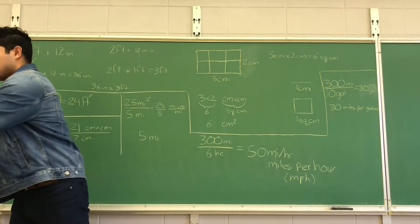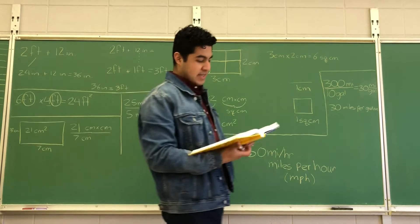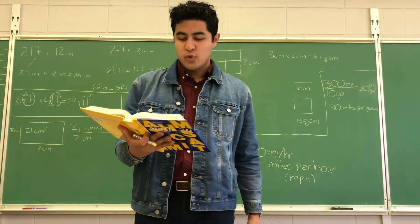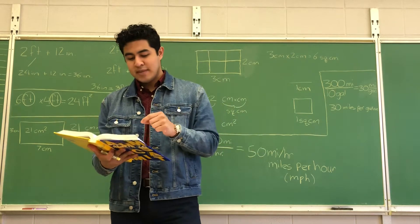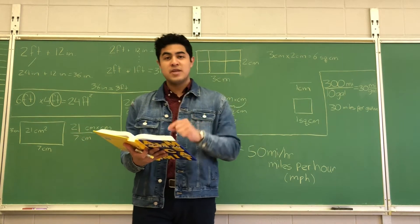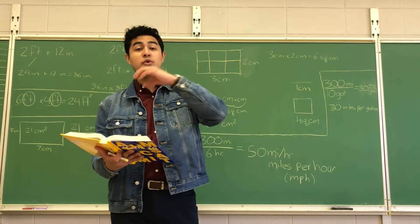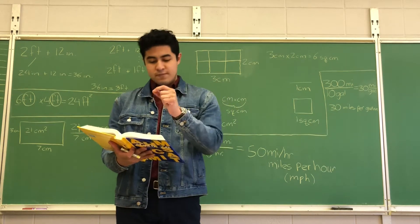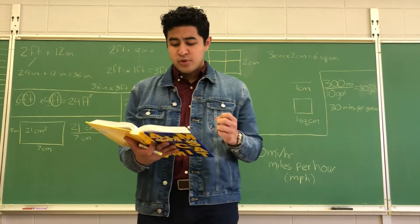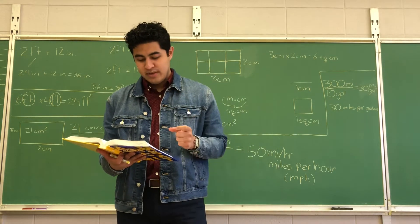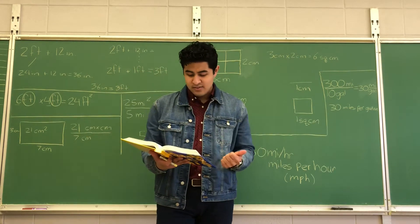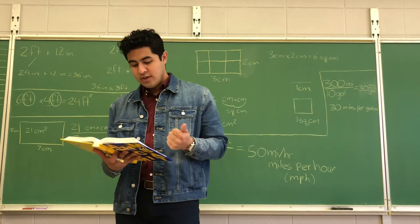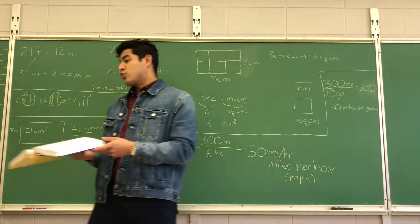Recall that the operations of arithmetic are addition, subtraction, multiplication, and division. In this lesson we will practice adding, subtracting, multiplying, and dividing units of measure. We're not only working with the numbers — we're going to be working with units of measure. We may add or subtract measurements that have the same units. If the units are not the same, we first convert one or more measurements so the units are the same, then we add or subtract.